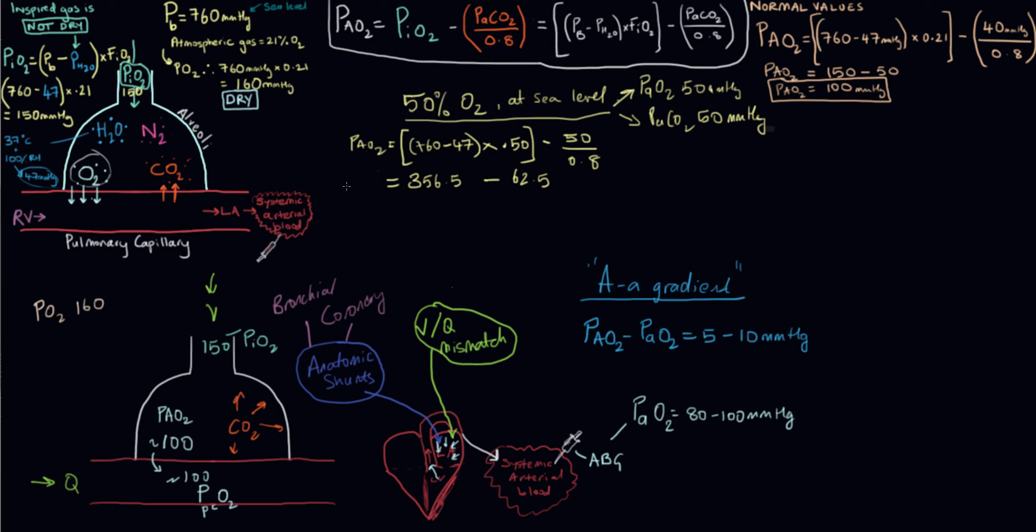What that gives us is a PAO2 of 294 millimeters of mercury. That's our alveolar partial pressure of oxygen. But we said that our arterial was 50. So if we do 294 minus 50, what do we get? That gives us 244 millimeters of mercury. So that is our AA gradient in this patient.